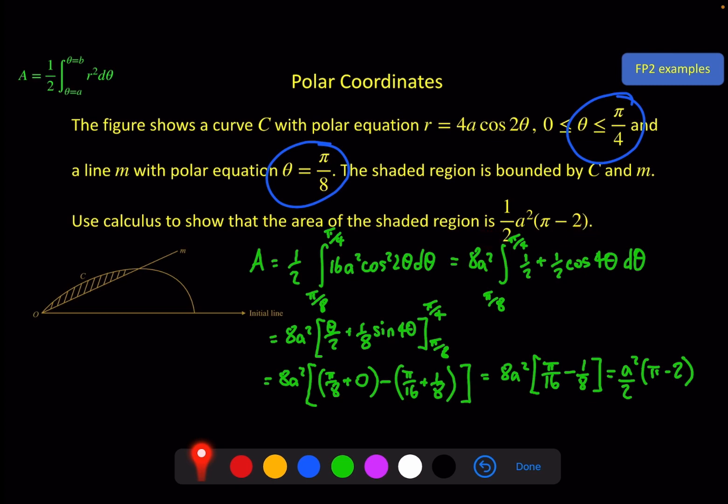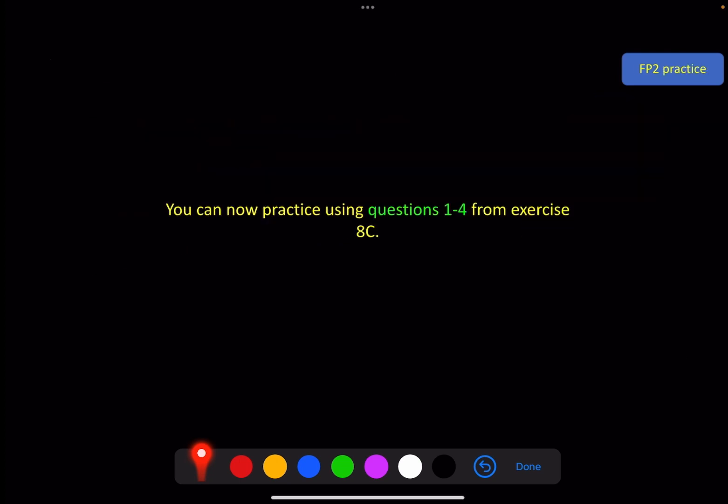I hope that's enough to give you an idea of what's going on here and how to do these sorts of questions. We do need to take it further by considering polar curves that overlap but I'm going to put that in a separate video. So you can now practice using questions 1 to 4 specifically from exercise 8c and we'll look at the rest in the next video. Maybe I'll see you there.